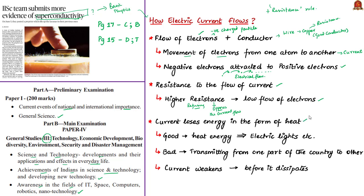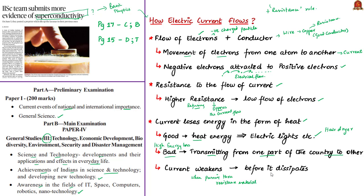When current cannot pass through smoothly, it loses some of its energy in the form of heat. This is why a phone gets hot when charging. While this energy loss is not always bad — it gives us electric lights and heat from hair dryers — when transmitting power across the country, this energy loss is incredibly inefficient. Additionally, the current weakens over time while passing through a resistant material as its strength is slowly taken away as heat energy, limiting how far an electric current can travel before it dissipates entirely.